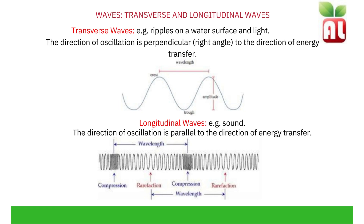Longitudinal waves, for example sound, are where the direction of oscillation or vibration is parallel to the direction of energy transfer. Think about a slinky being pushed backwards and forwards so that a pulse is sent down the slinky. Where the slinky bunches up together, this is an area of compression, where the waves are closer. Where the waves are spread out is described as an area of rarefaction. From one compression to the next, from one wave to another, is known as the wavelength.